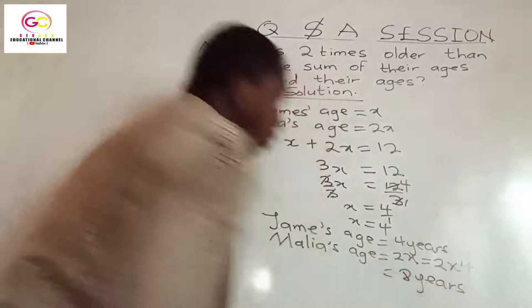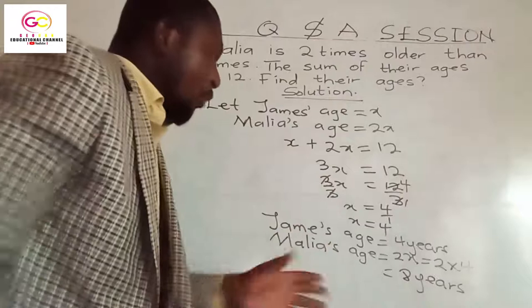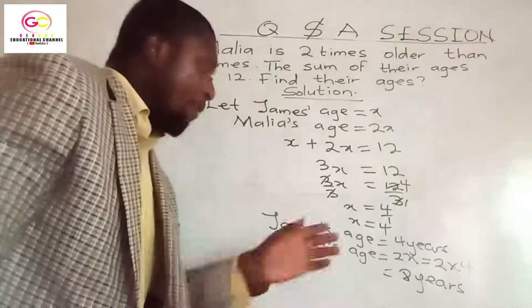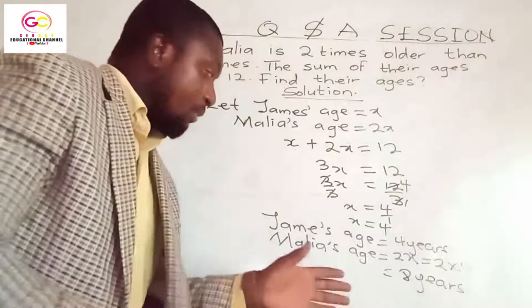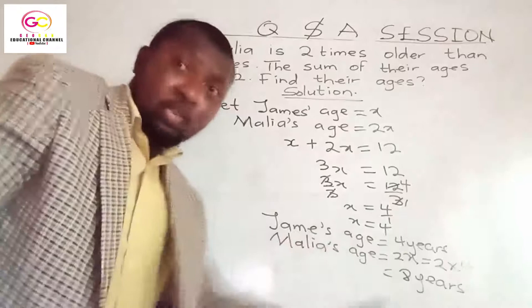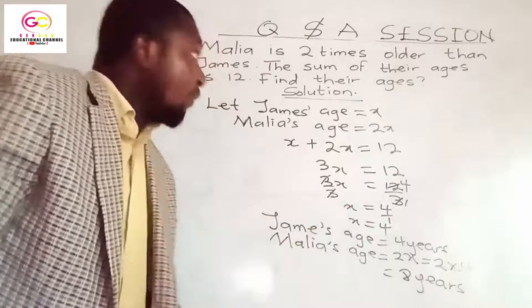So what it means is that James is 4 years and Malia is 8 years. And you can even prove your answer: James is 4, Malia is 8, and Malia's age is 2 times James' age — which confirms our answer is correct. Fantastic.